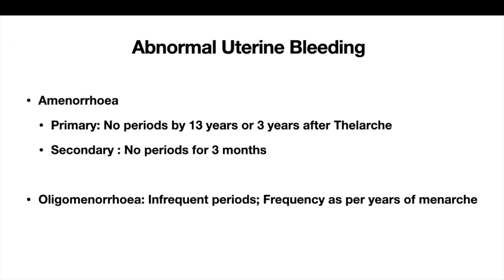What is oligomenorrhea? Many gynecologists use these terms and many pediatricians get very confused about the terminology. Oligomenorrhea is infrequent periods, but the frequency is defined per the years of menarche. In the first menarche year, if somebody is having less than six periods, she is in oligomenorrhea. From the second to fifth year, if there are less than eight periods, it is oligomenorrhea — having a period duration of six-weekly would be oligomenorrhea. Only after the fifth year of menarche do we use the adult definition: a cycle of more than 35 days.